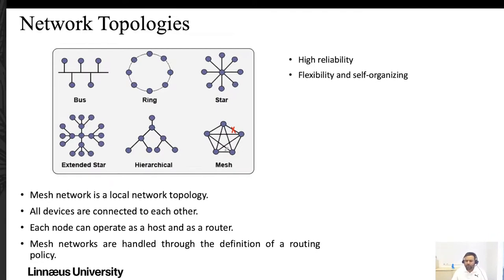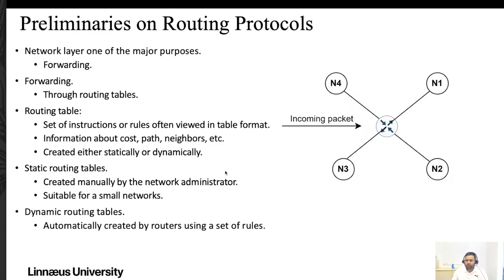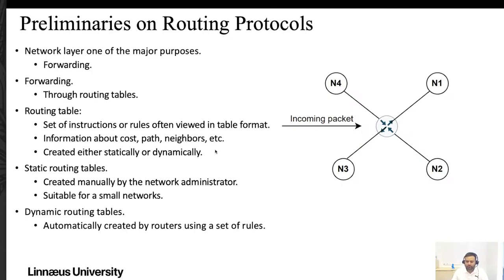Mesh is a local network topology where all devices are connected with each other. The benefit is that if any link is broken, all devices can still communicate, giving us high reliability. In mesh, each node can operate as both a host and a router, providing more flexibility and self-organizing features. Mesh networks are handled through routing policies. When we talk about routing, let's see what it is and how basic routing protocols work.